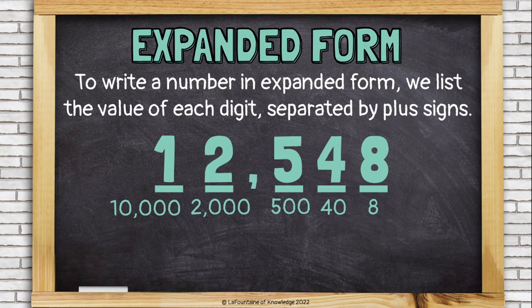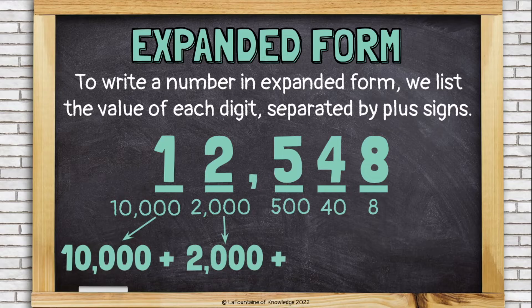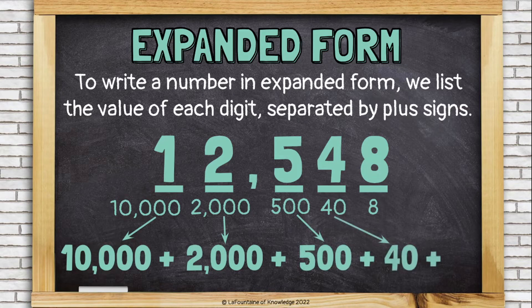And the 1 in the 10,000's place is worth 10,000. So to write this number in expanded form, we will write the values and separate them with plus signs like this: 10,000 plus 2,000 plus 500 plus 40 plus 8.